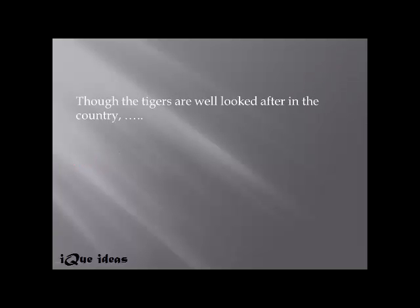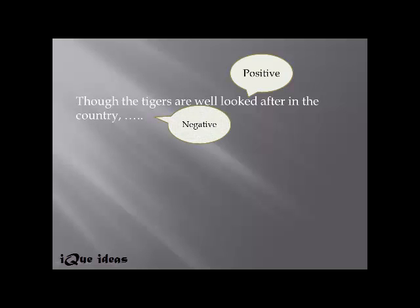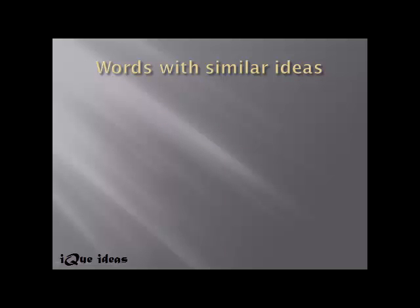Moving to the next example: 'Though the tigers are well looked after in the country, ___.' Again we have a positive idea starting with 'though,' a contradicting conjunction, so a negative idea is needed. For example: 'Though the tigers are well looked after in the country, their numbers are decreasing.' Words like 'though' and 'although' work as markers of contrasting ideas.